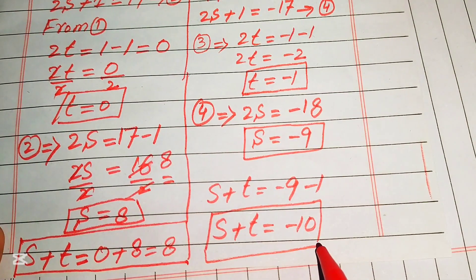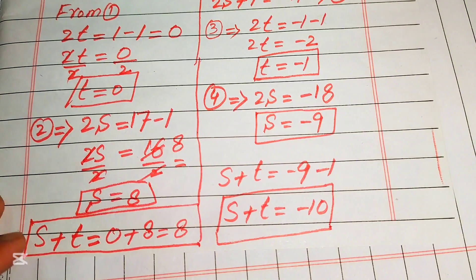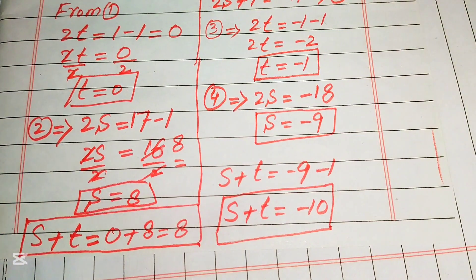So the final values of s plus t in this problem are 8 (from Case 1) and minus 10 (from Case 2). Thank you so much for watching this video. Please subscribe to my channel for more exciting videos!